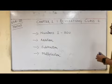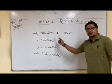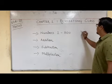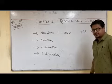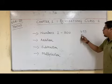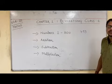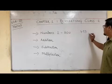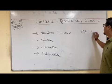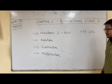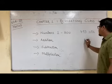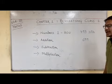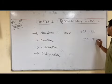Now let us have some small examples for all four topics. Suppose I take the number 493. What is its after number — the number which comes after it? The after number of 493 is 494. Now suppose I take the number 699. What is the after number of 699? The after number of 699 is 700.